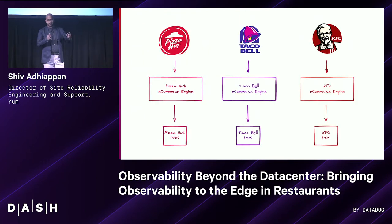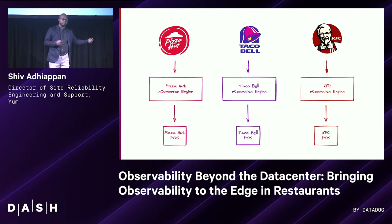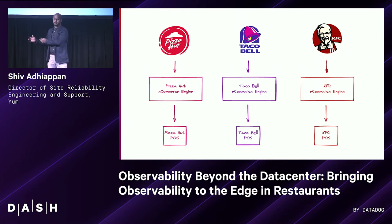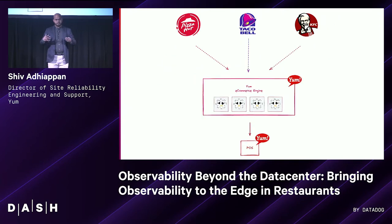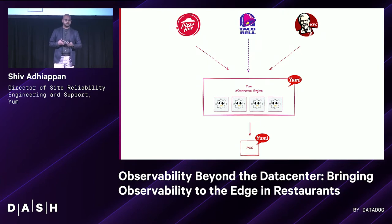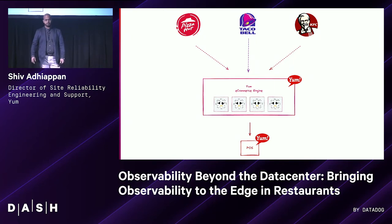Currently in transition — each of our brands has their own technology solutions. Pizza has its own e-commerce and POS; Taco Bell is completely separate; KFC is different. What we're doing is bringing all of that together under a single e-commerce engine, allowing the brand teams to control the fan experience. They know the customers best, so they build the fan experience there. Similarly with the point-of-sale devices as well.